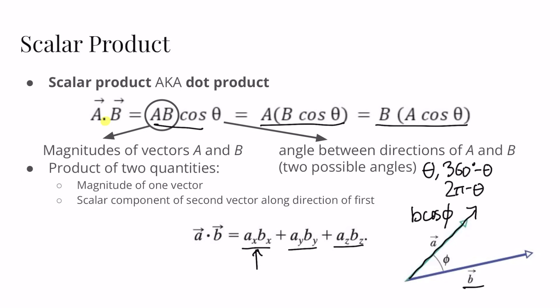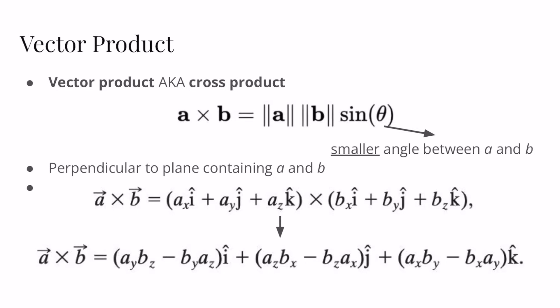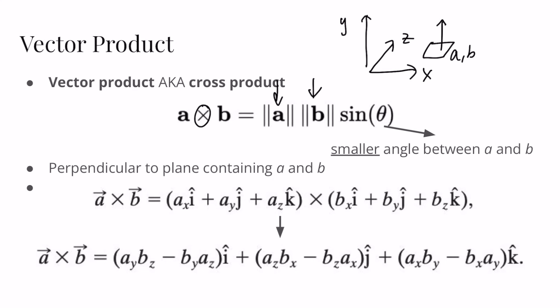Now we'll move on to the vector product, also known as the cross product — named for the cross symbol used. The cross product takes the magnitudes of the two vectors but multiplies by sine θ instead of cosine θ. The angle also matters here, so we use the smaller angle between the two vectors. The vector product is perpendicular to the plane containing both A and B — for example, if A is in the z direction and B is in the x direction, the cross product would be in the y direction.